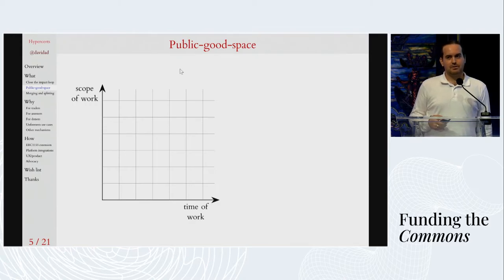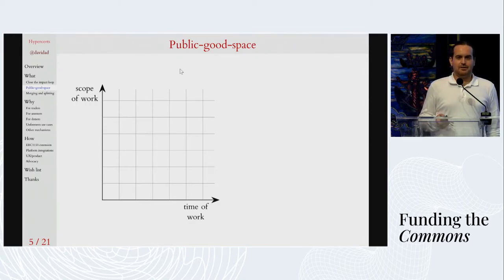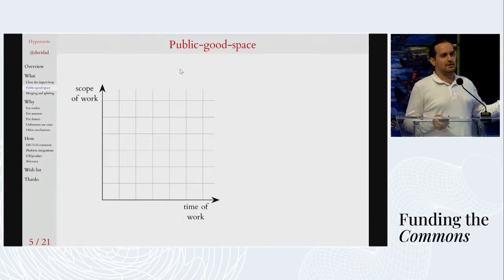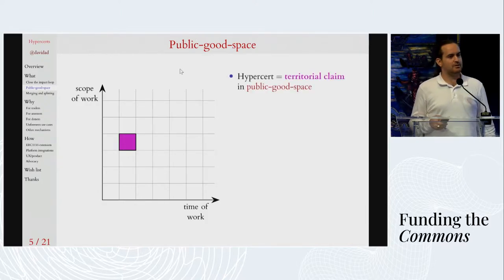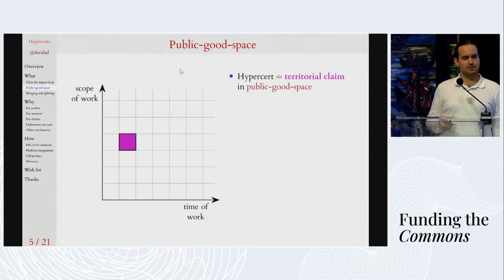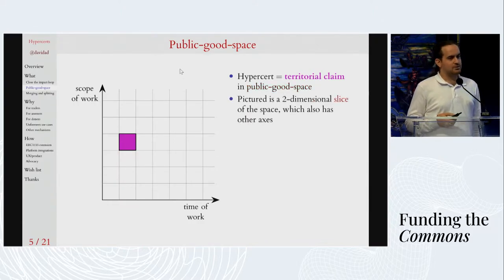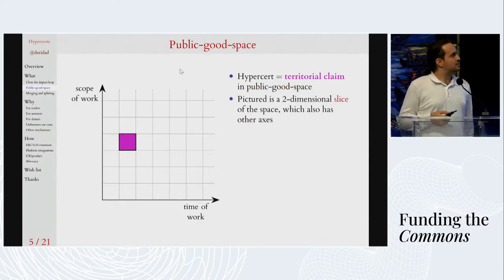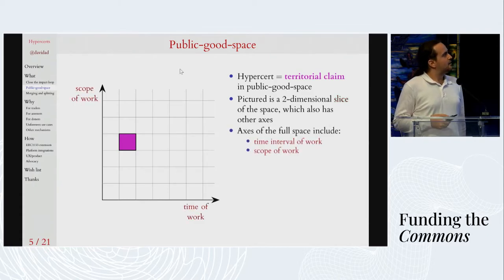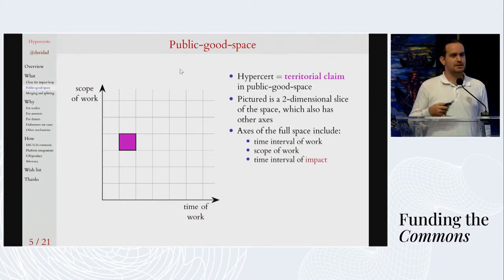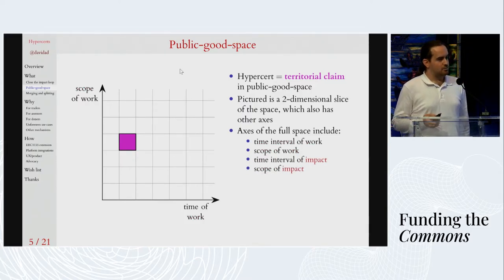I introduce this concept of the public goods space — a geometric space with many axes. For example, the time the work was done and the scope of the work. A hypercert represents a territorial claim in this public good space: the right to retroactive rewards attributable to that region. Here we picture a two-dimensional slice, but there are more dimensions. The full space also includes the time in which the impact actually bears fruit and the scope of the impact.